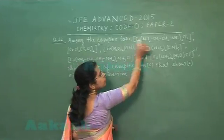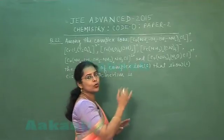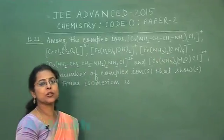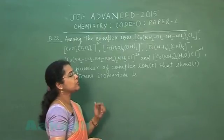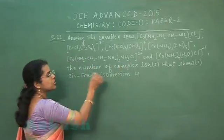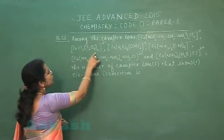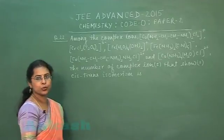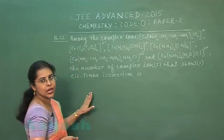Looking at the first complex ion: one ligand is ethylenediamine and the other is chlorine, which is a monodentate ligand. With respect to chlorine, the two chlorine ligands may be present at cis-position or at trans-position, so this complex will exhibit geometrical isomerism. In the second complex ion formula, there are also two chlorine ligands which may differ in position with respect to each other, forming either a cis-isomer or trans-isomer.